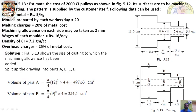The pattern is to be supplied by the customer. The following data can be used: cost of metal is rupees 5 per kg; each worker prepares 20 molds per day; melting charges is 20 percent of metal cost; machining allowance is 2 mm on each side; wages of the molder is rupees 16 per day. So cost per mold is 16 divided by 20, which is 0.8 rupees. Density of cast iron is 7.2 grams per cc; overhead charges is 25 percent of metal cost.